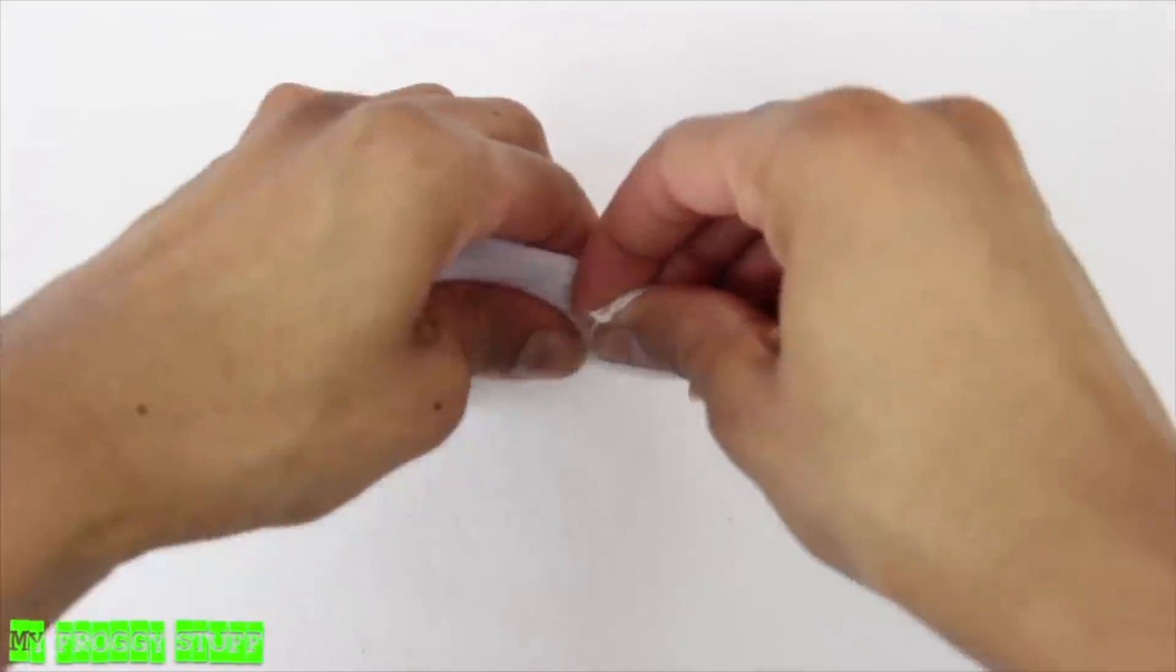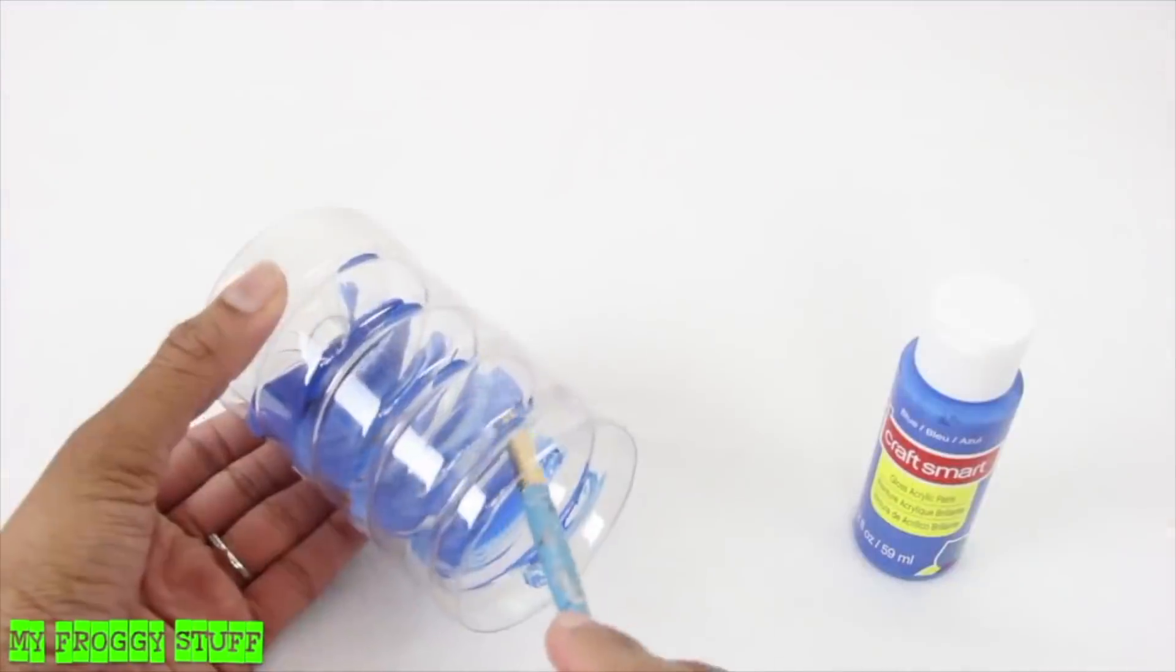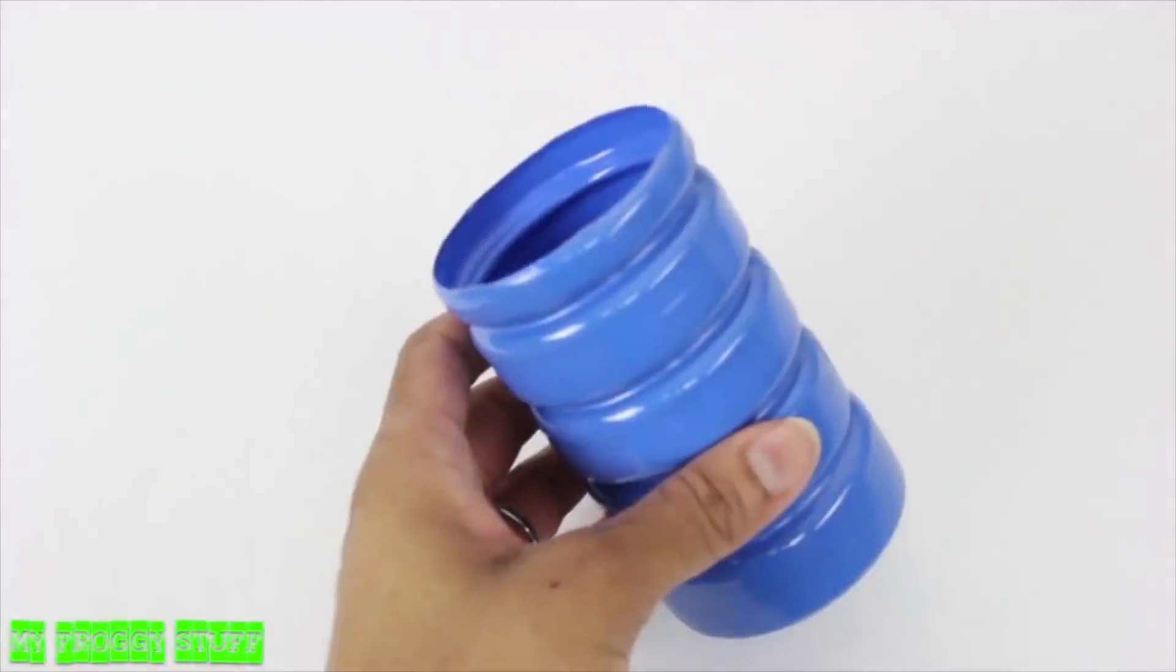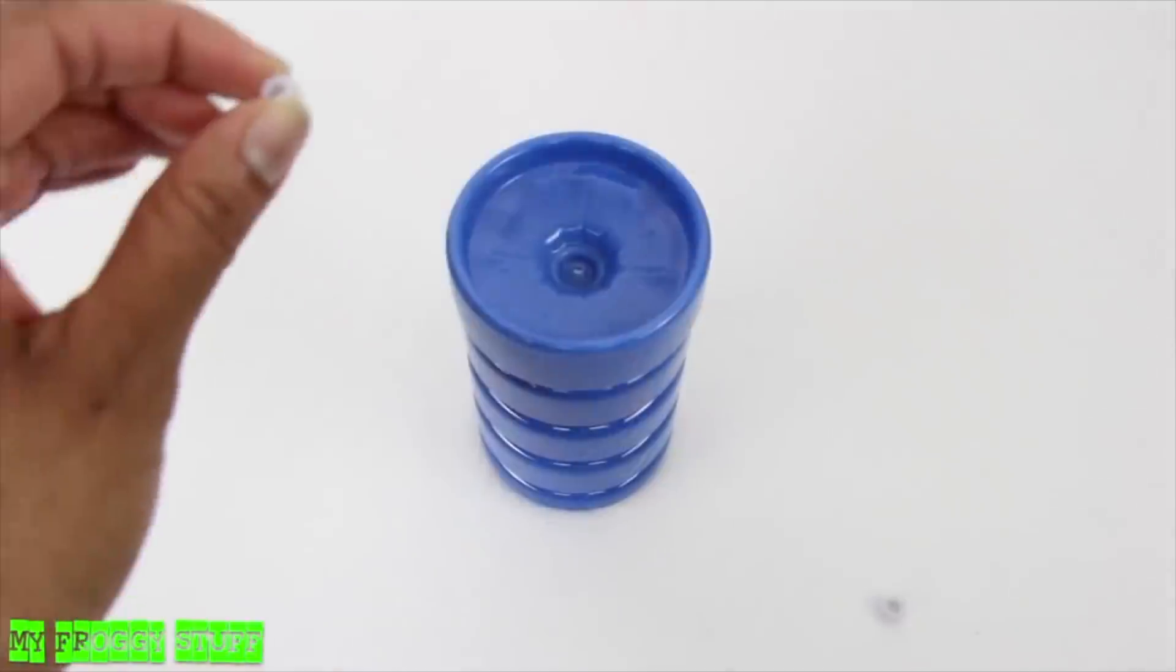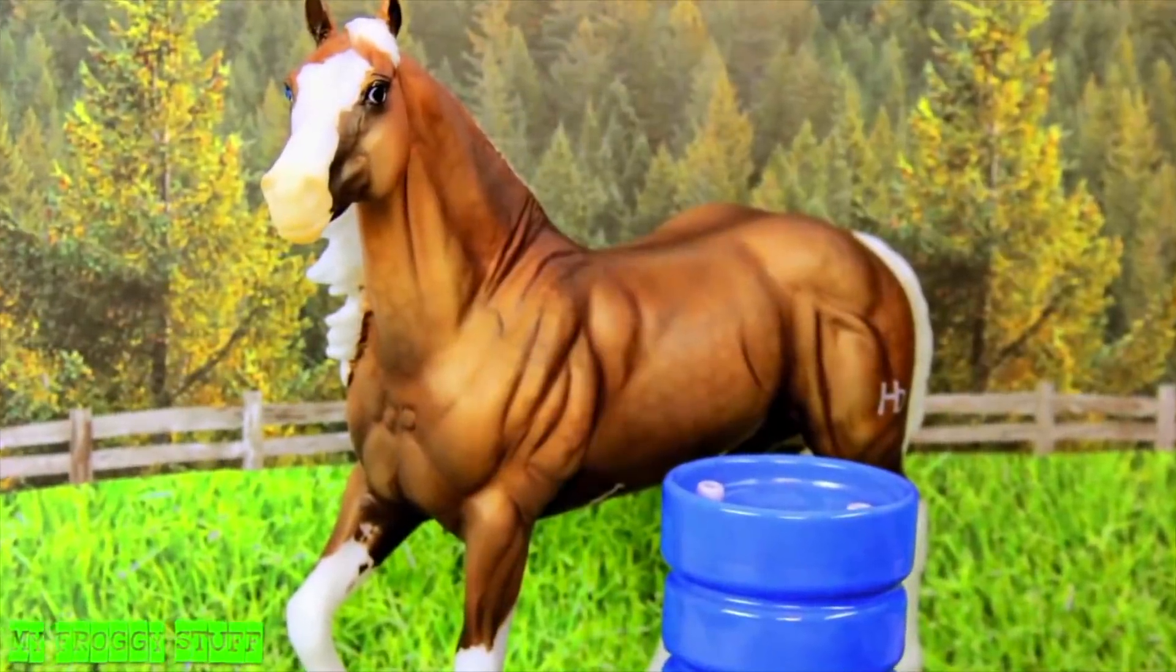Tie the other end so the dolls have something to put in their new trash cans. Or paint a bottle blue. Once dried, turn it over. Glue on beads. To make a barrel. And you're done. Happy crafting!